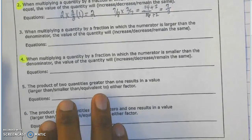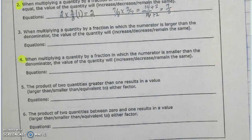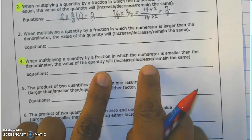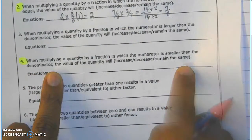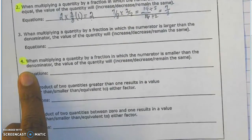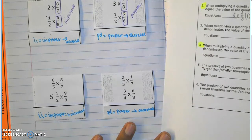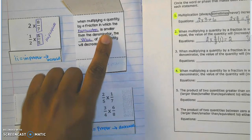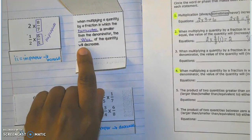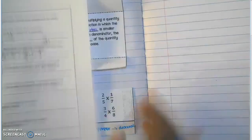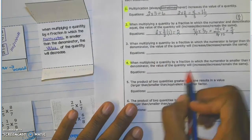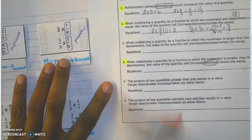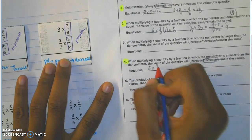Number four: when multiplying a quantity by a fraction in which the numerator is smaller than the denominator, the value of the quantity will increase, decrease, or remain the same. This is the exact wording from our notes. Going back to the notes: when multiplying a quantity by a fraction in which the numerator is smaller than the denominator, the value of the quantity will decrease. So the answer for number four is right in our notes — the quantity will decrease. You can use the same examples from the notes or create your own.